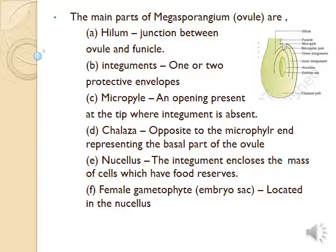The main parts of the megasporangium are: the hilum, which is the meeting point of the ovule and funicle; the integuments, which are protective layers; the micropyle, which is the opening where integuments are absent — this is where the radicle emerges; the chalazal end, the basal part of the ovule; and the nucellus, an important part consisting of a mass of cells surrounded by integuments that contain food reserves. The female gametophyte is present within the nucellus.